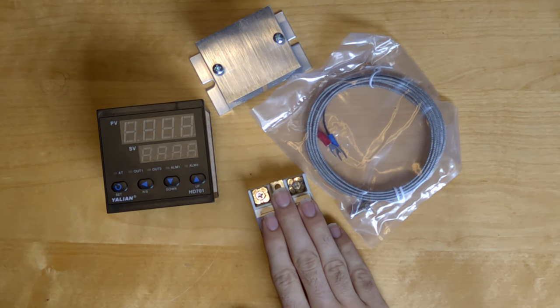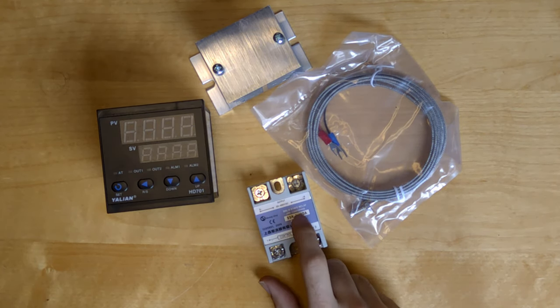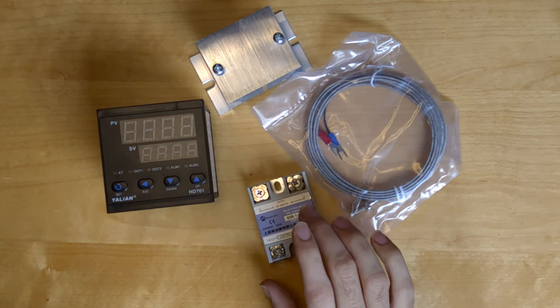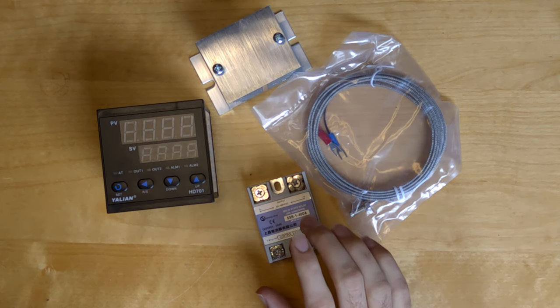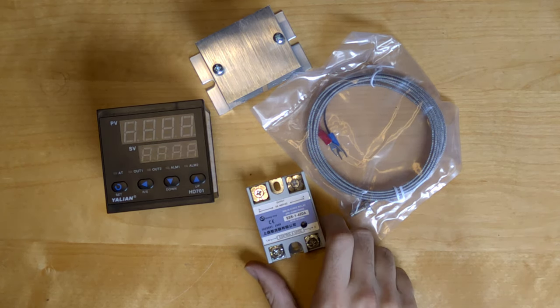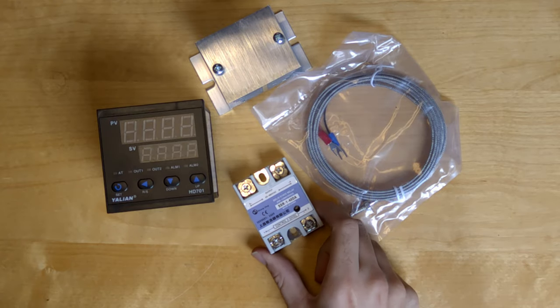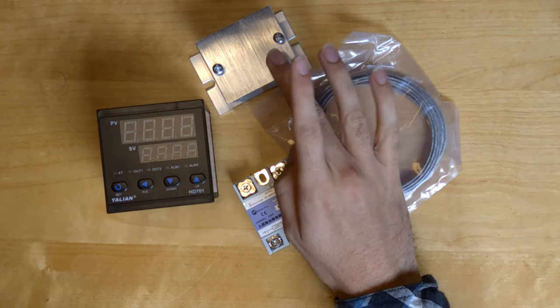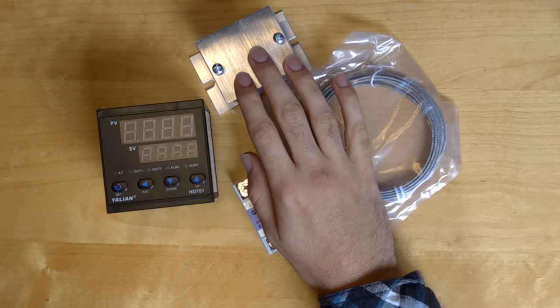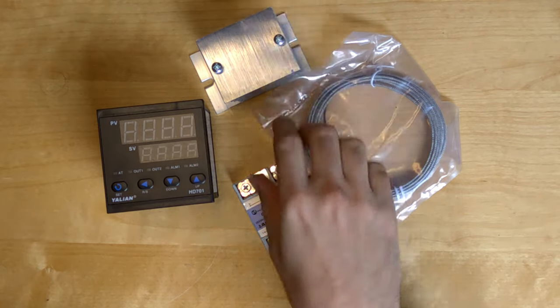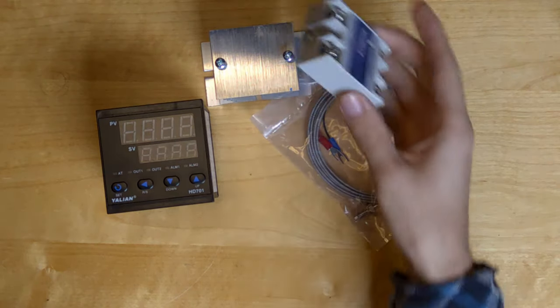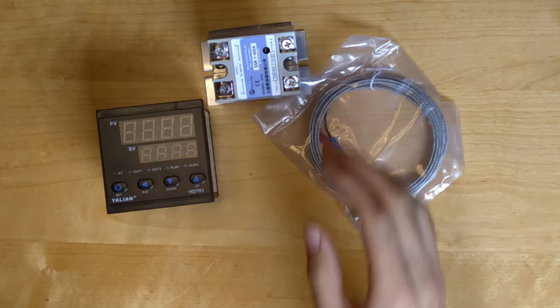I got a solid state relay. The solid state relay is rated up to 40 amps. I'm not needing 40 amps, but it's best to over-spec it a bit. I got a heatsink to go with it. Those screws weren't part of the kit; I supplied them myself. They fit really well.